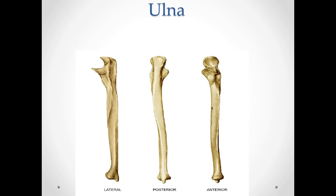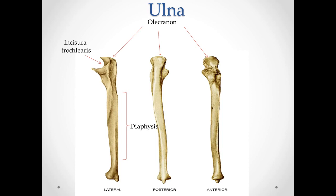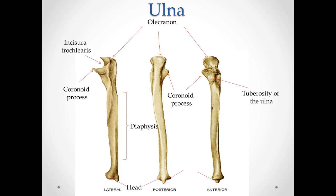Ulna. In the forearm it is located medially, on the side of the little finger. It consists of a body, or diaphysis, and two epiphyses. On the proximal epiphysis there is a block-shaped incision, incisura trochlearis, which serves to articulate with trochlea humeri. An ulnar process, or olecranon — it limits the incisura trochlearis above. The coronoid process, processus coronoideus, limits the incisura trochlearis below. Here we also observe the tuberosity of the ulna. On the distal epiphysis there is a head, caput ulnae, and the styloid process, processus styloideus, which departs from the medial edge of the head.